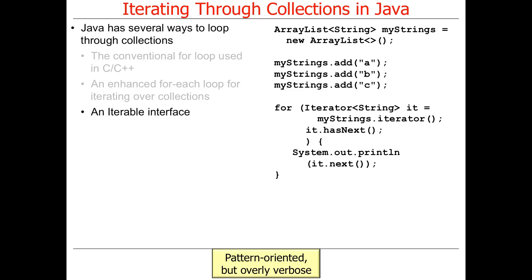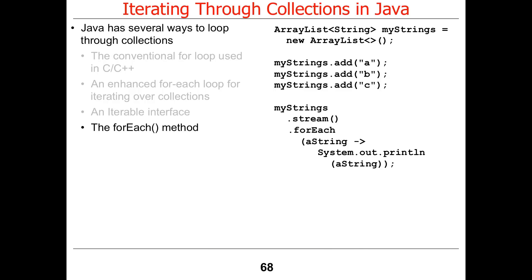Using the iterator is very pattern-oriented but kind of verbose. The fourth and final way, which is just too cool for its own good, is to use the new forEach method, which is part of Java 8 streams. What this does is basically take the myStrings ArrayList, convert it into a stream with the .stream() operator, and then for every element in the stream — which are Strings — go ahead and print each one out. It looks a little mysterious and we'll have to talk about it later when we cover lambda expressions.